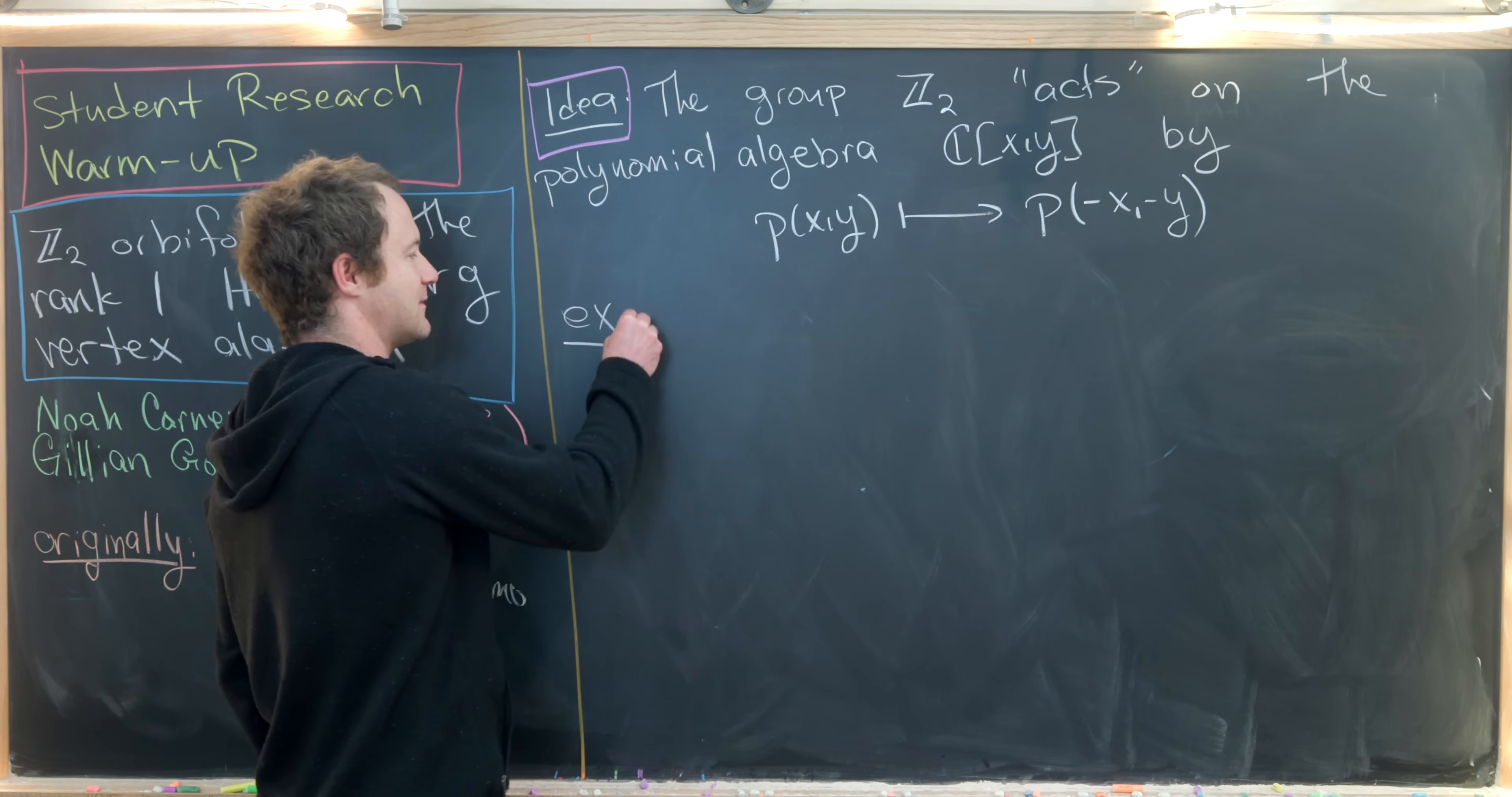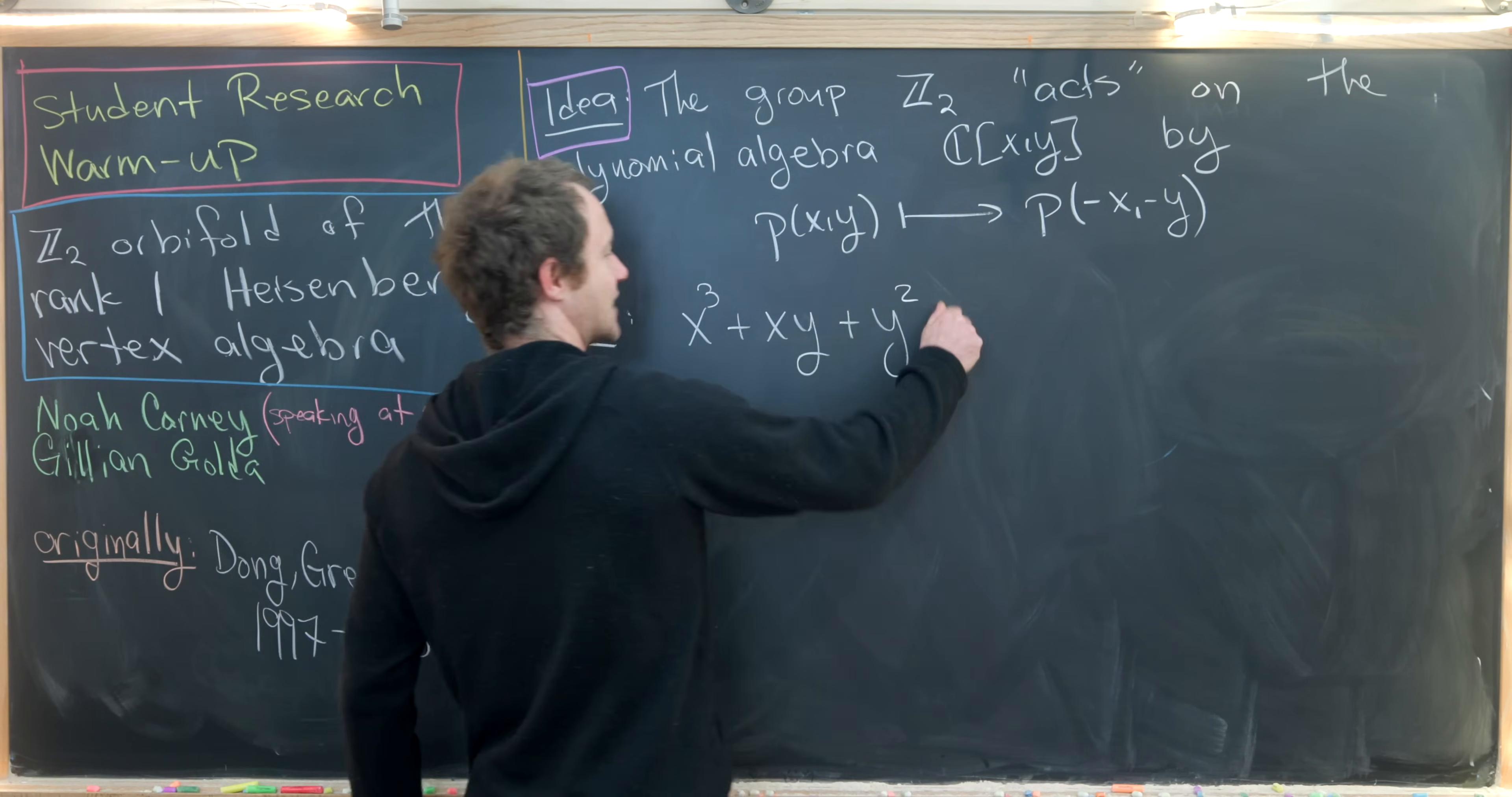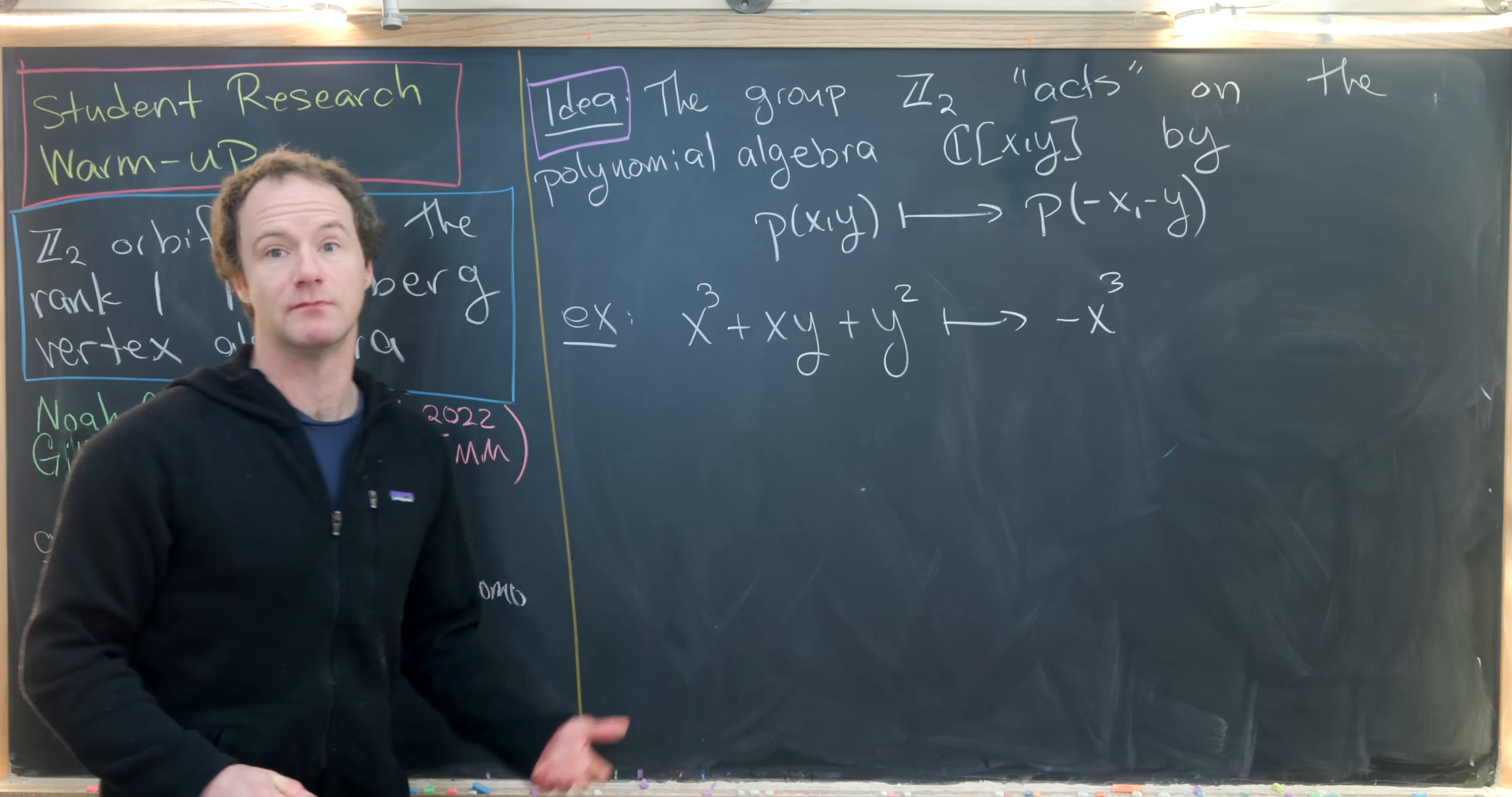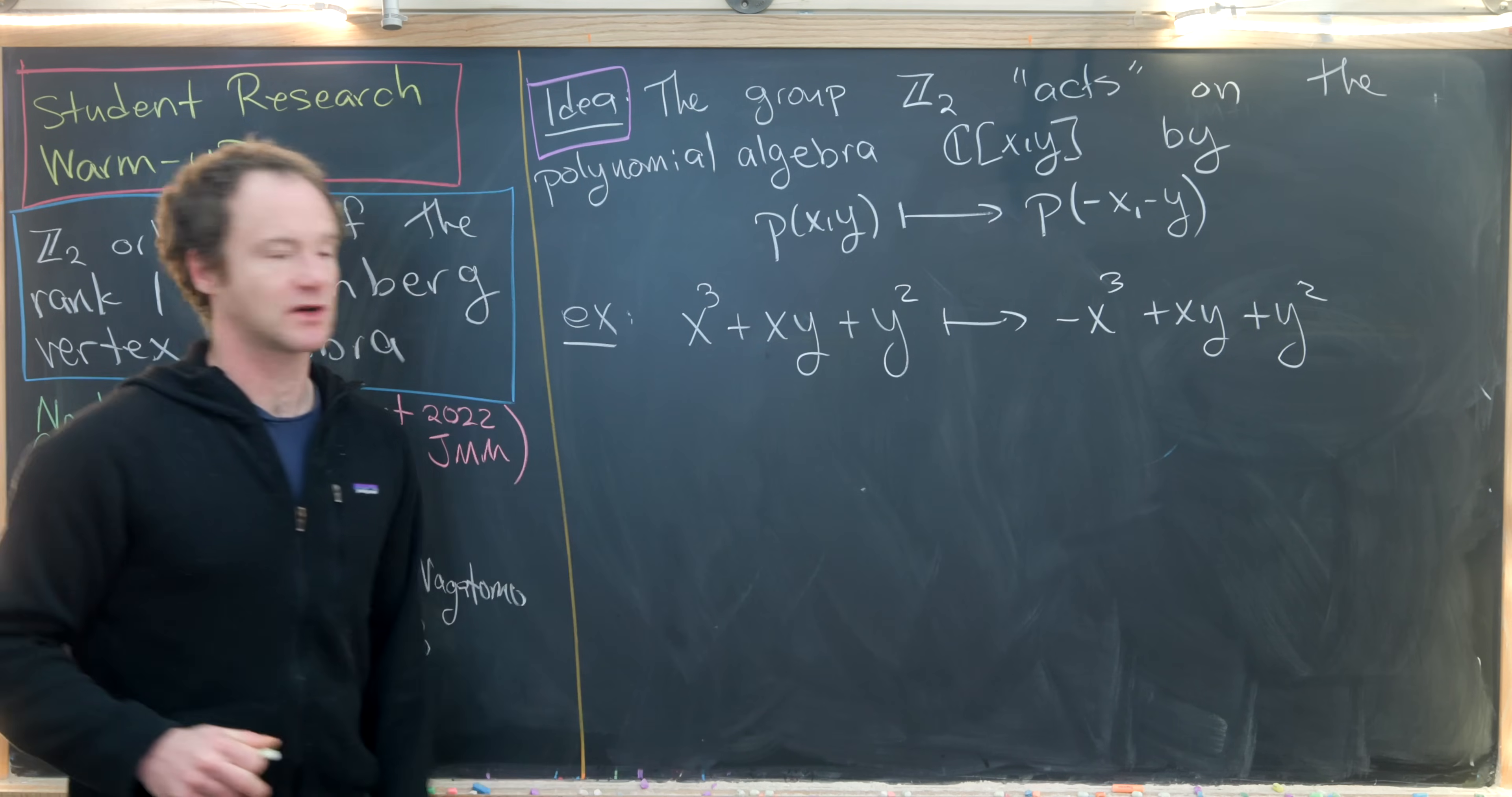Let's look at some examples of things that are fixed and not fixed under this action. If we take X cubed plus XY plus Y squared, under this action some of these guys are fixed and some aren't. X cubed is not fixed because minus one cubed is minus one. But XY is fixed because it'll be minus X times minus Y and the minus sign cancels. The Y squared term is also fixed.